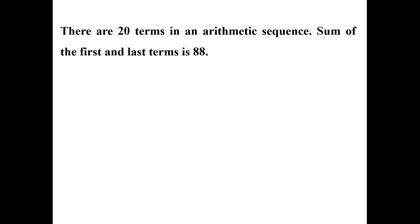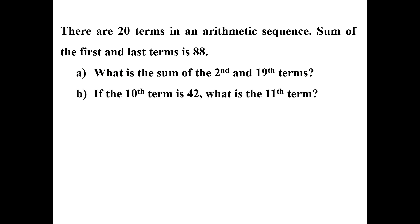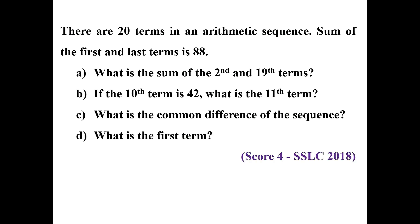There are 20 terms in an arithmetic sequence. The sum of the first and last terms is 88. What is the sum of the second and 19th terms? What is the 11th term if the 10th term is 42? What is the common difference? What is the first term? This is a question from SSLC 2018 with a score of 4. Given that x1 plus x20 equals 88.